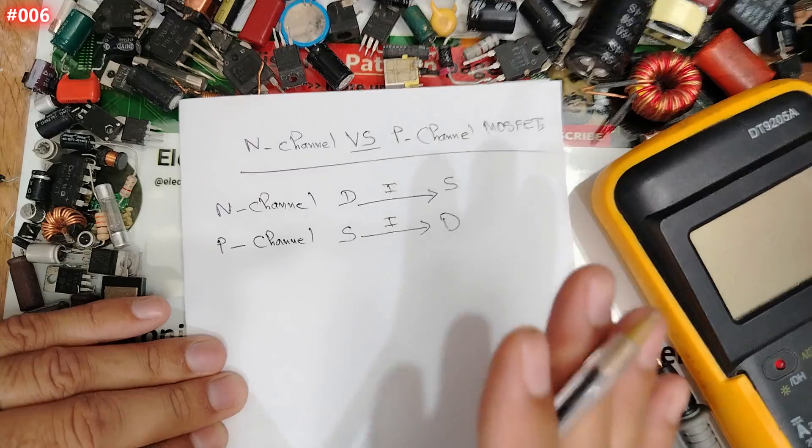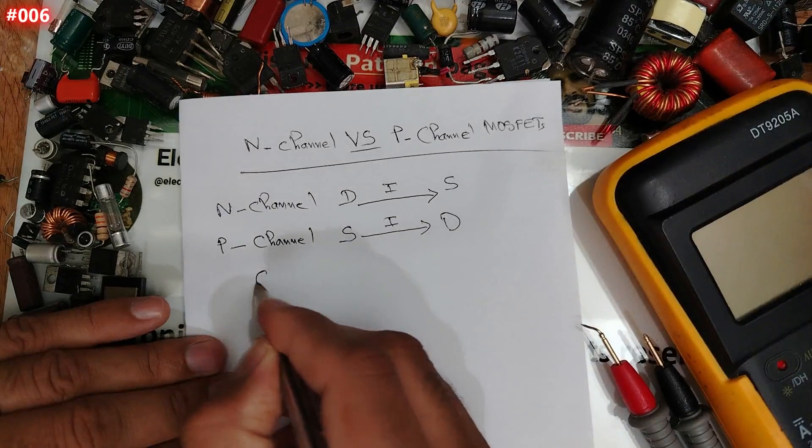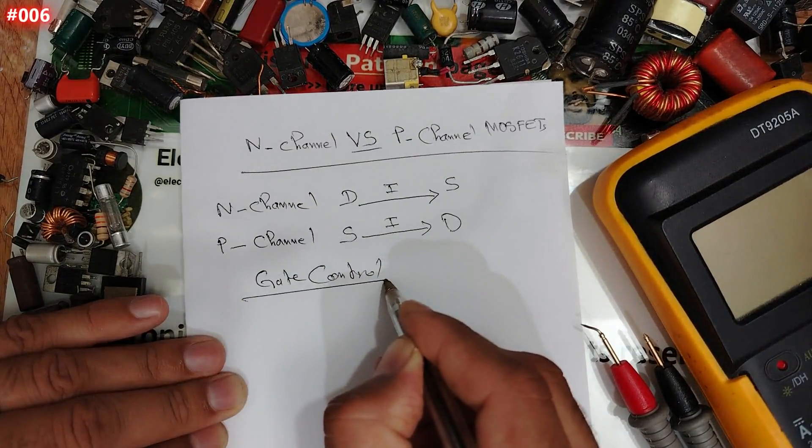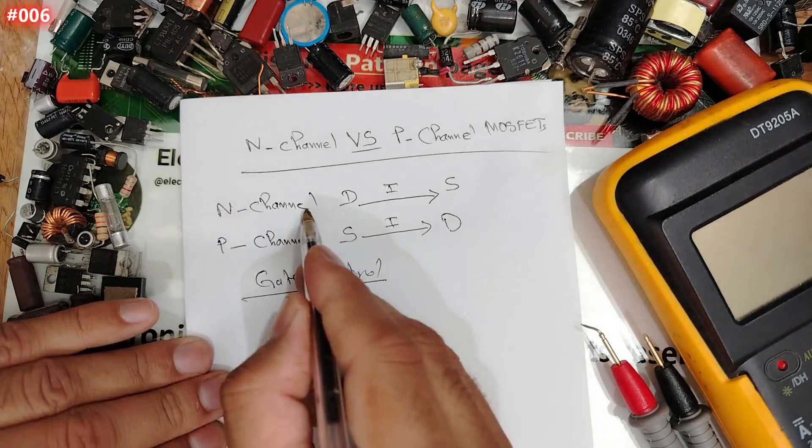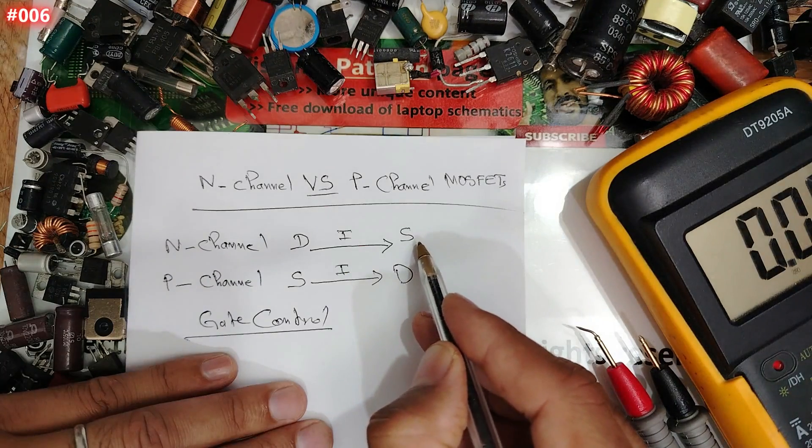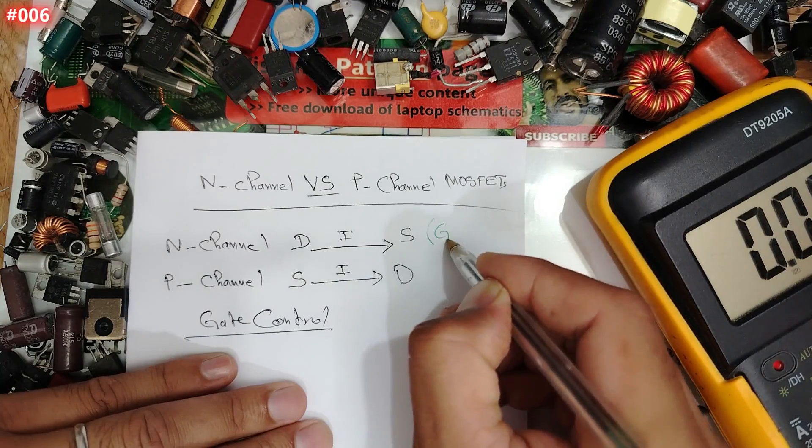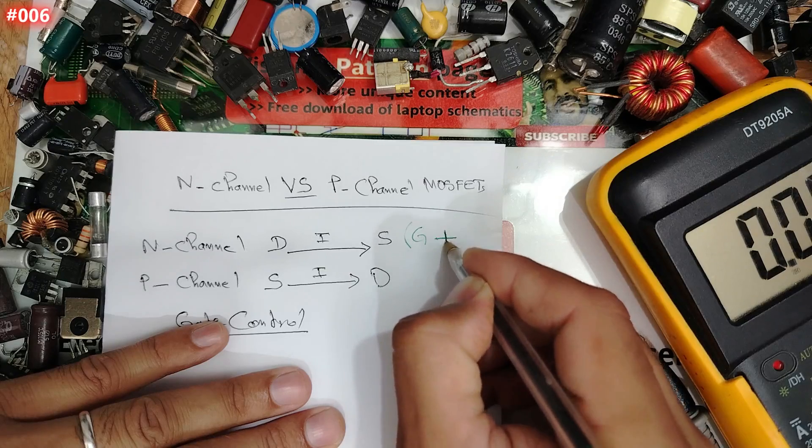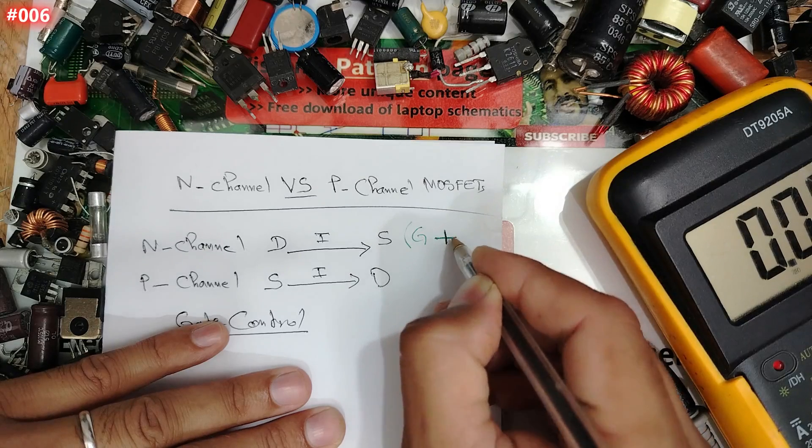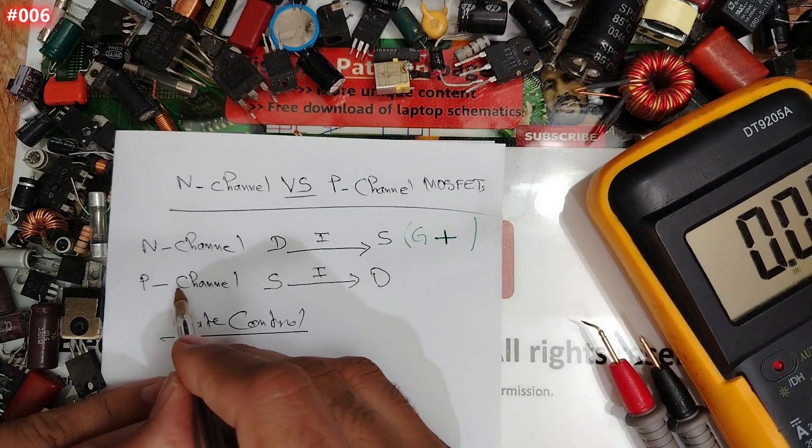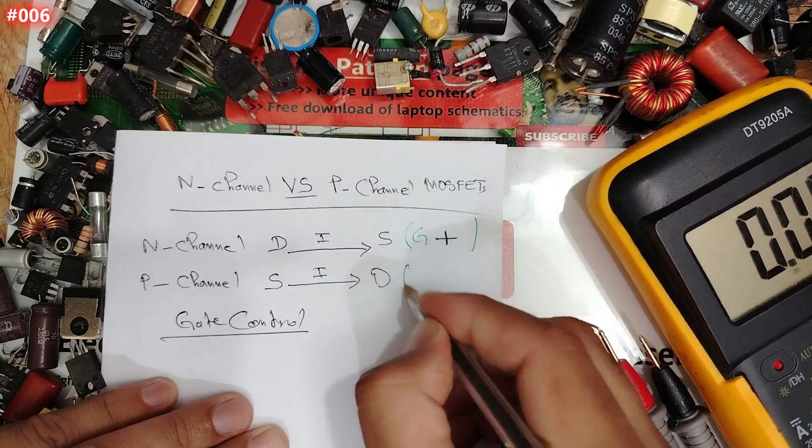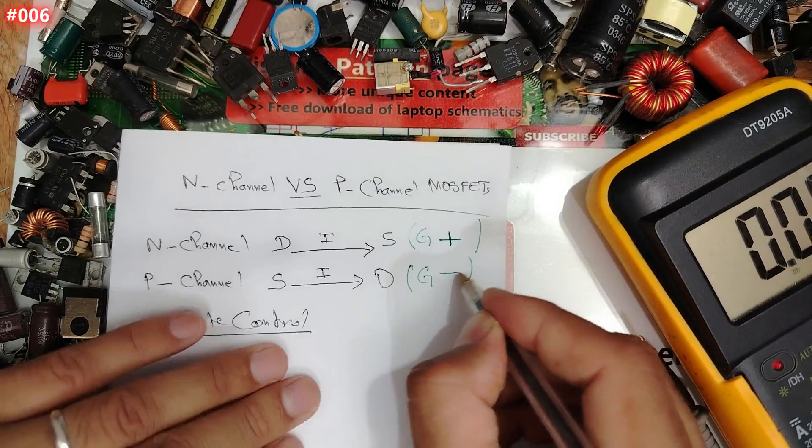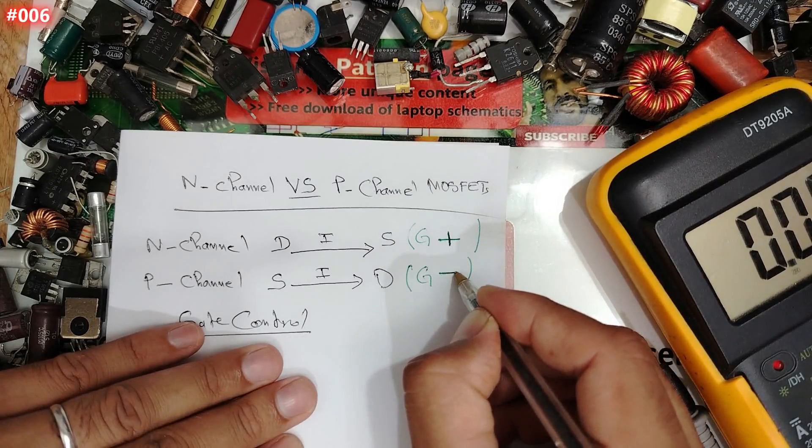But here is the most important thing, the gate control. For N-channel, it turns on when the gate is more positive than source, means we need positive voltage. But for the P-channel, it turns on when the gate is more negative than the source, means we need negative voltage.